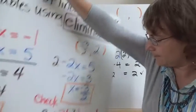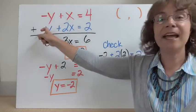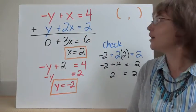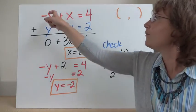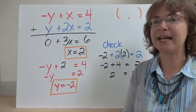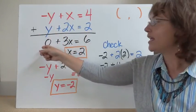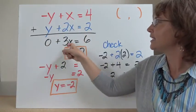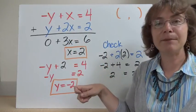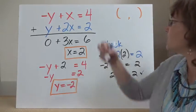Let's look at another example. I have the equation negative y plus x equals 4, and the equation y plus 2x equals 2. These are both lines. I'm going to find the coordinate at which they intersect. When I add them, I'm going to be eliminating my y's — I have a negative y here and a positive y here. So 0y plus x plus 2x gives me 3x. 4 plus 2 gives me 6. So 3x equals 6. Divide both sides by 3, and x equals 2.